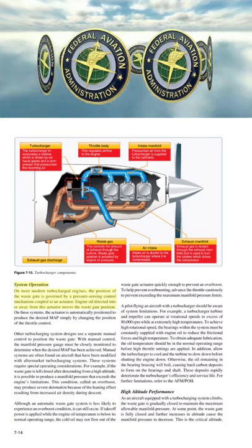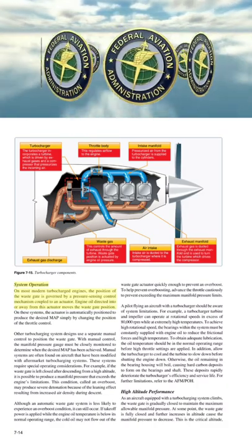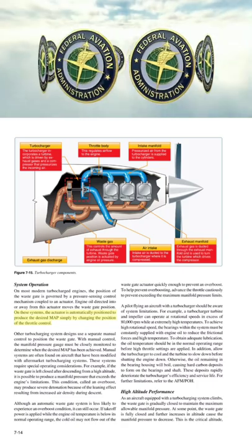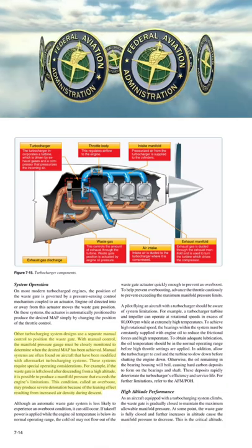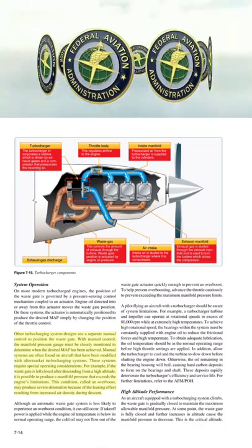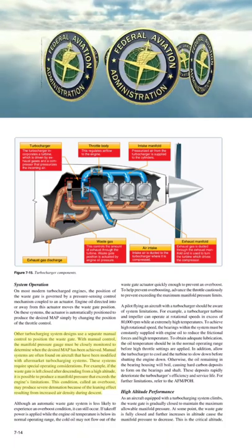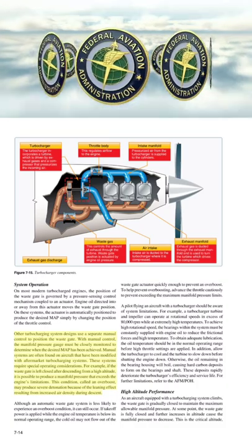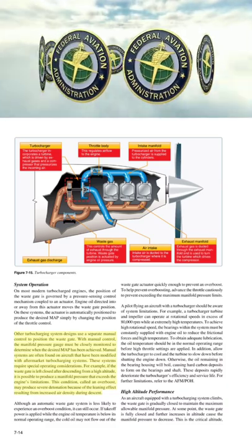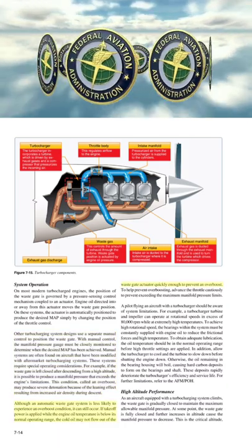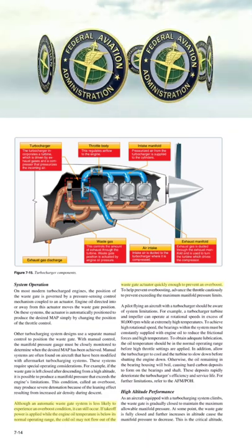On most modern turbocharged engines, the position of the wastegate is governed by a pressure-sensing control mechanism coupled to an actuator. Engine oil directed into or away from this actuator moves the wastegate position, and the actuator is automatically positioned to produce the desired MAP simply by changing the throttle. Other turbocharging designs use a separate manual control to position the wastegate, requiring close monitoring of the manifold pressure gauge. Manual systems are often found on aircraft modified with aftermarket turbocharging systems and require special operating considerations. For example, if the wastegate is left closed after descending from a high altitude, it is possible to produce a manifold pressure that exceeds the engine's limitations — a condition called an overboost — which may produce severe detonation.